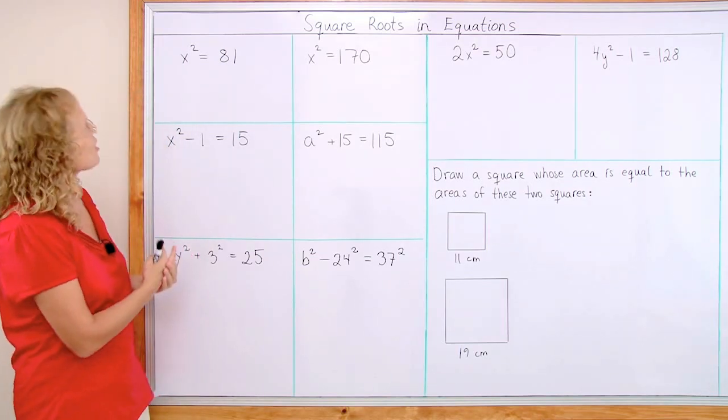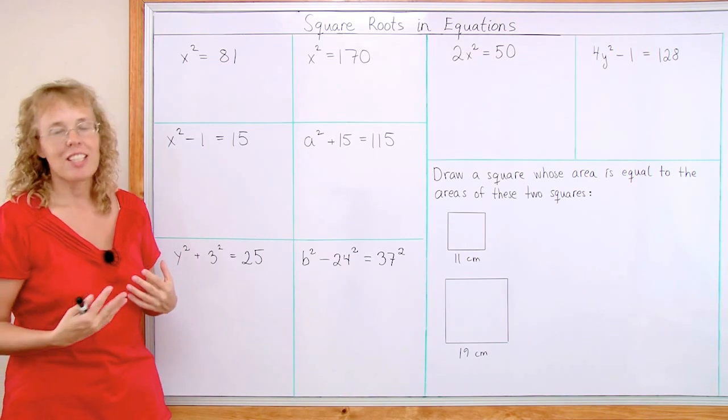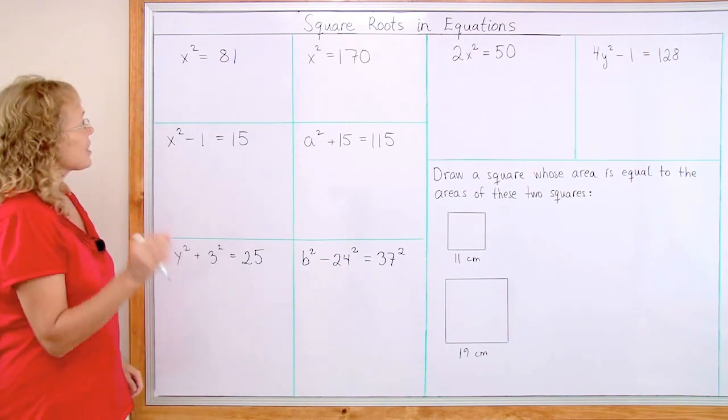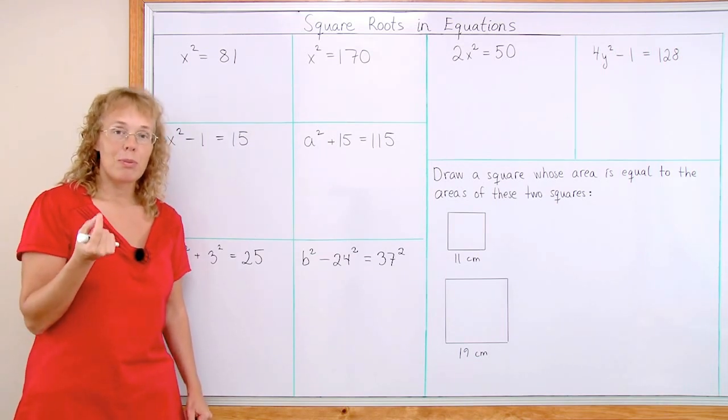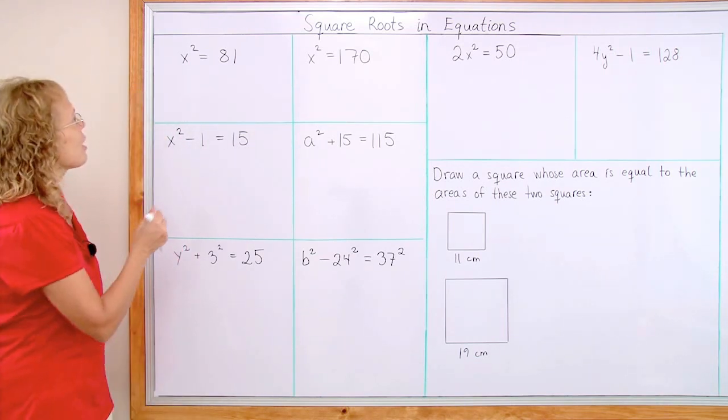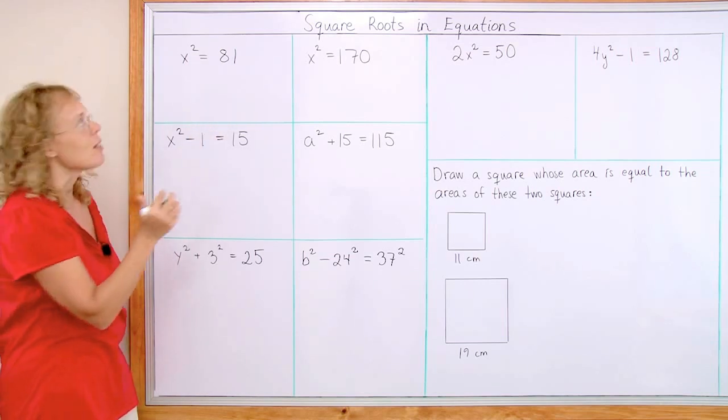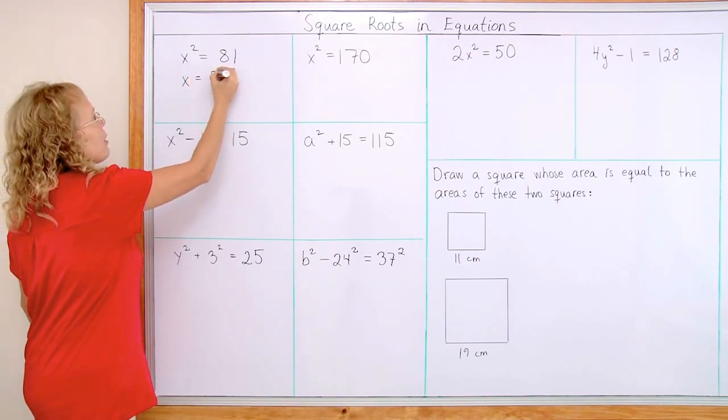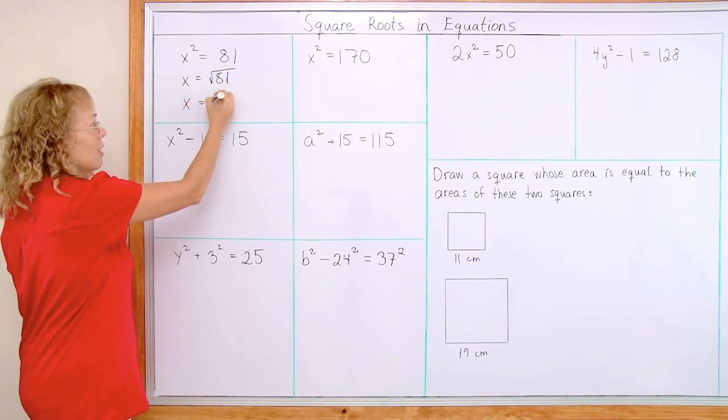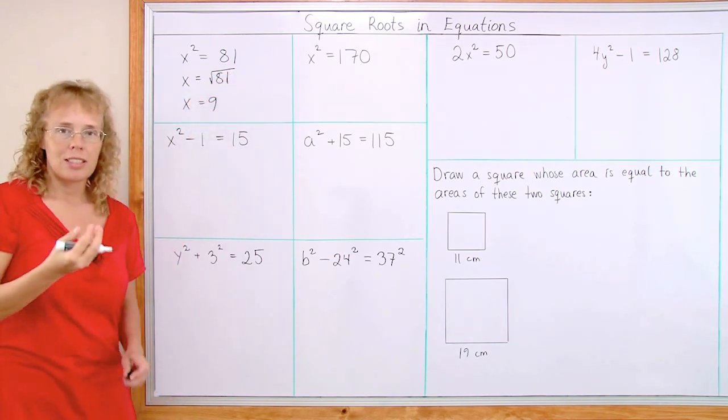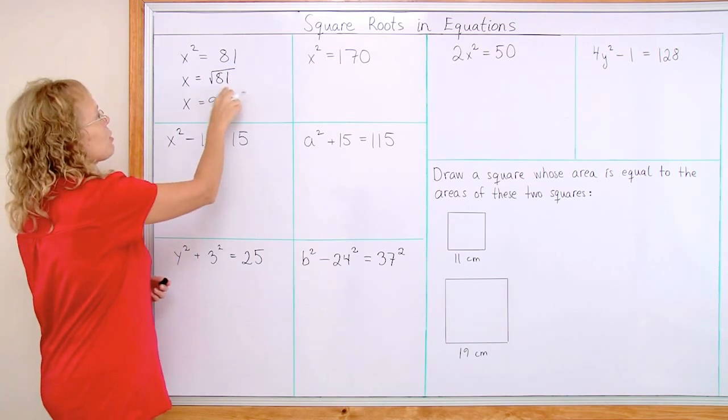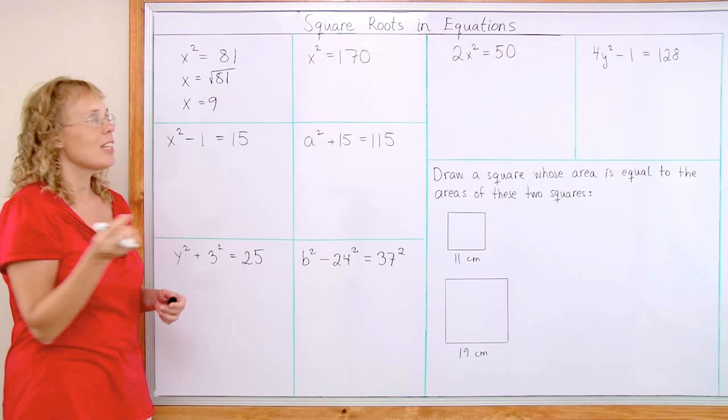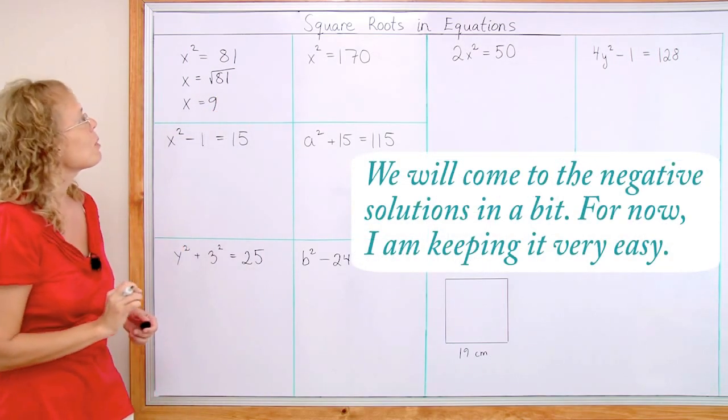And you probably can see the solution, it's going to be 9, right? Because 9 squared equals 81. But since square roots and squaring are the opposite operations, I can also write an intermediate step here, that x equals square root of 81. And then that of course is 9. Square root of 81 is 9 because square root here means that you need to think about the number multiplied by itself gives you 81. 9 is such a number.